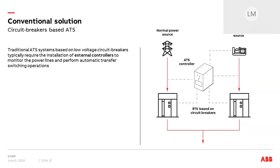Both air circuit breakers and molded case circuit breakers are suitable for ATS applications according to the technical requirements of the installation. Accessories for remote operations, mechanical and electrical interlocks, as well as communication between devices are also required. The external ATS controller is typically responsible for voltage and frequency sensing and is able to detect abnormal conditions like voltage unbalances or phase losses. It also allows the setting of parameters like time delays and provides a basic human-machine interface to monitor system operations and conditions.